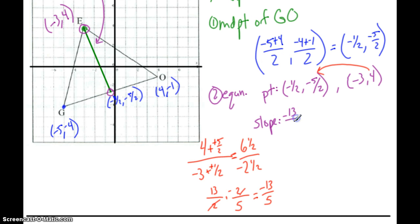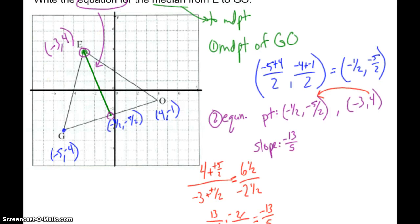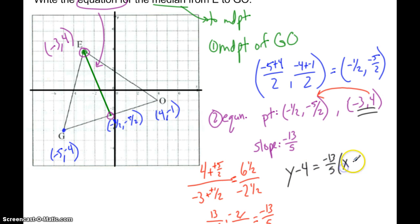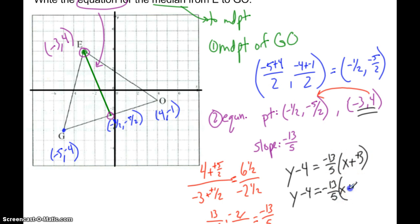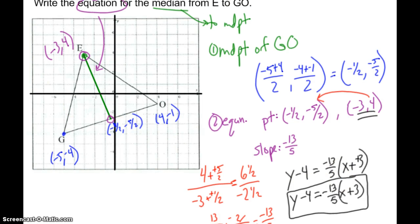My slope is negative 13 fifths. It is negative because the line goes downhill left to right. Using that slope and point E at negative 3, 4, I can write the equation in point-slope form: y minus 4 equals negative 13 fifths times (x minus negative 3). You can leave it in this form — if you need a different form, distribute and rearrange as your teacher requires.